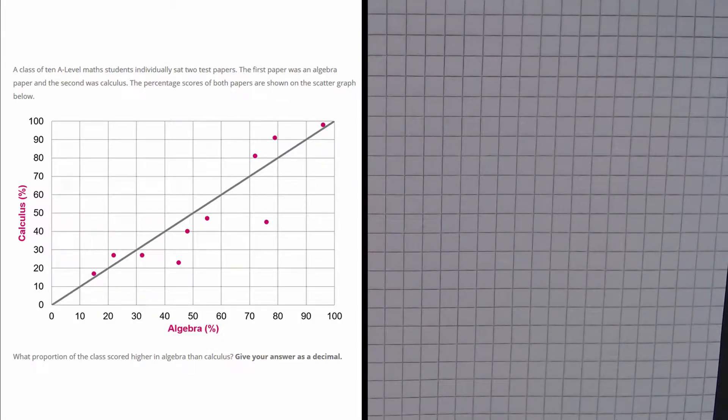So in this question we are given a scatter graph, and we are asked to find the proportion of the class that scored higher in Algebra than Calculus.